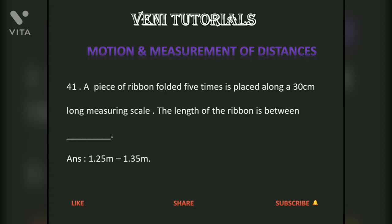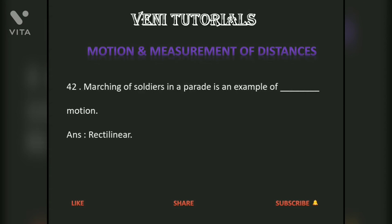A piece of ribbon folded five times is placed along a 30 centimeters long measuring scale. The length of the ribbon is between 1.25 meters to 1.35 meters. Marching of soldiers in a parade is an example of rectilinear motion.